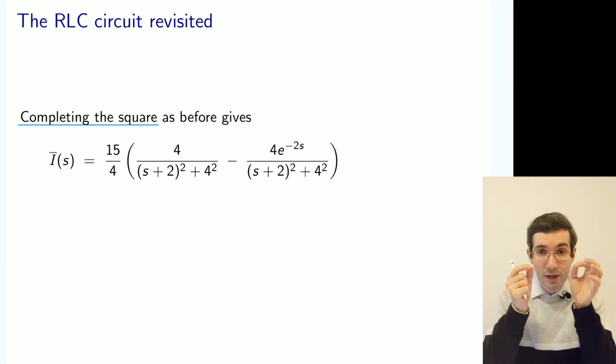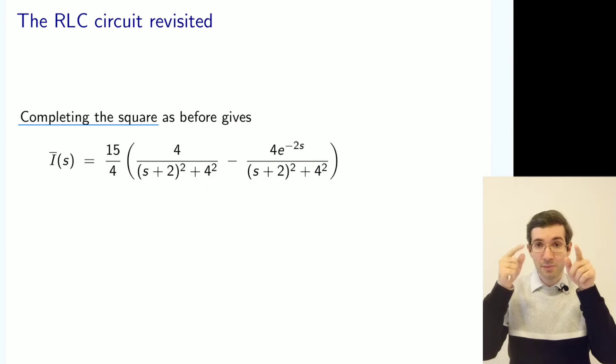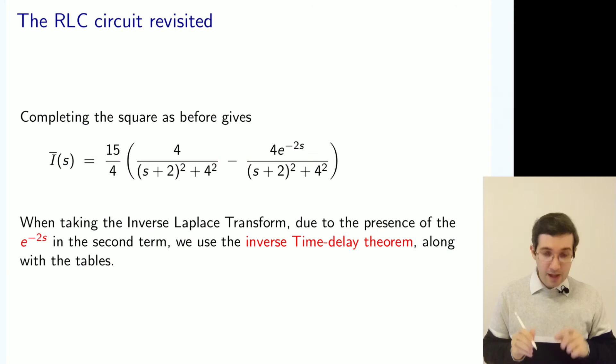Because we had, if you remember in the previous step, we had numerator involving one minus exponential. So that's why it's two fractions. And that's not a simple fraction.